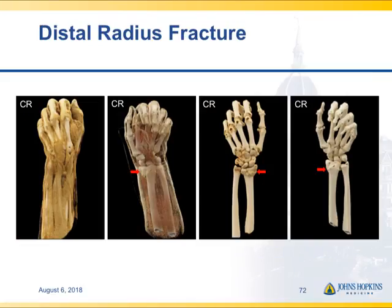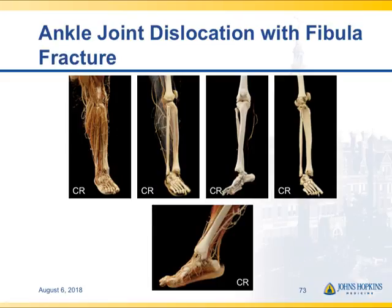Another example of a distal radial fracture shows a range of cinematic renderings. This goes back to the point that you can have an infinite number of images created, but you need the right renderings — it's not easy in practice unless someone experienced is creating and visualizing the images. In this complicated dislocation at the ankle joint, you can see the vessels; there's a fibula fracture, but the vessels appear intact despite the extensive bony injury.